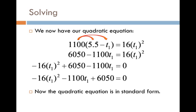Now, if you compare this with standard form, you can see that we finally have our quadratic equation in a very nice form and we can solve it: -16(t1)^2 + 6050 - 1100t1 = 0.